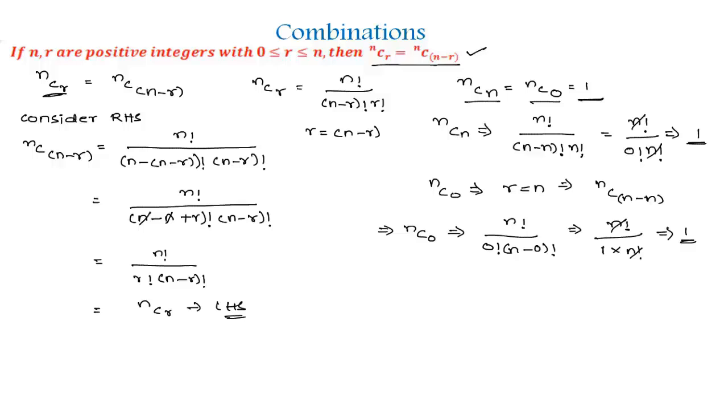Always remember the values nCn and nC0 are both equal to 1. This is how we prove a theorem on combinations. Hope you understood this concept. In our next videos we are going to solve a few more examples on the same concept, so stay tuned. Thanks for watching, have a good day.